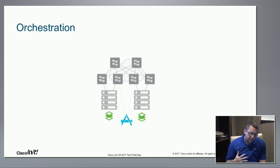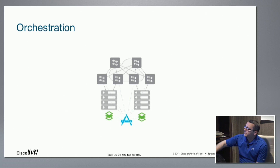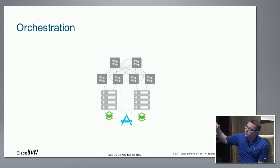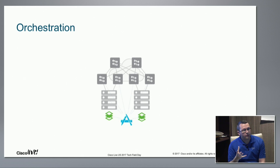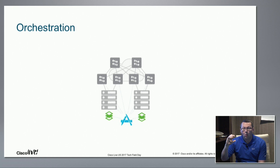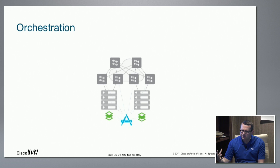Let's build that out further. There's an orchestration layer with a lot of dotted lines. In most data center orchestration solutions, you're primarily touching compute and maybe the switching fabric. The important distinction with Secure Agile Exchange is that we're actually reaching into — using a data center analogy — the applications. In our case, those are the virtual network functions, and we're orchestrating configuration and policy on those VNFs as well.